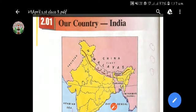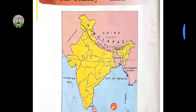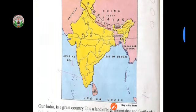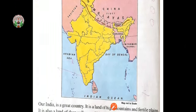We learned about our country. India is the 7th largest country in the world. It is the 2nd most populated country in the world. It is also known as Bharat. India is a peninsular landmass which means it is surrounded by oceans from 3 sides: the Bay of Bengal in the east, the Arabian Sea in the west, and the Indian Ocean in the south.